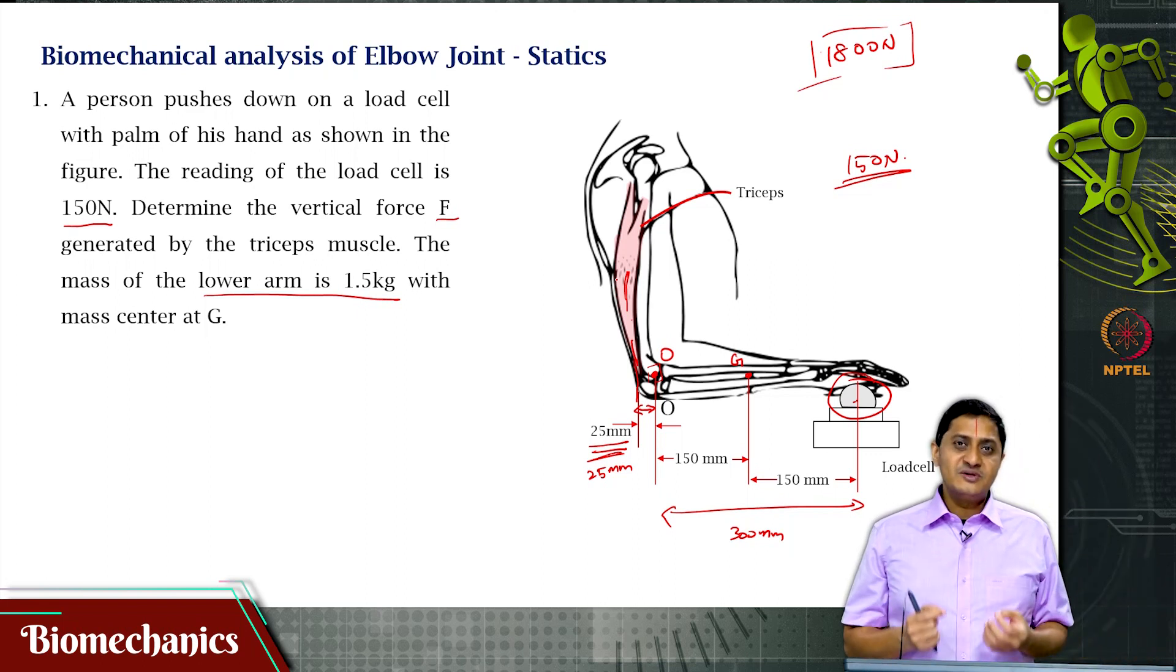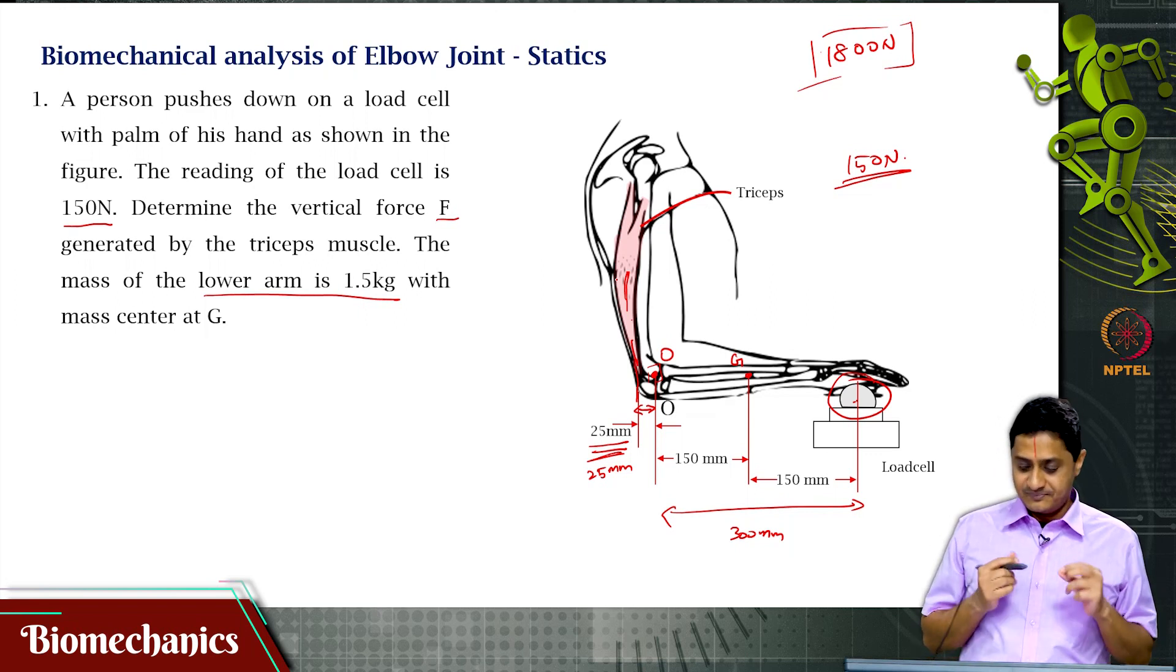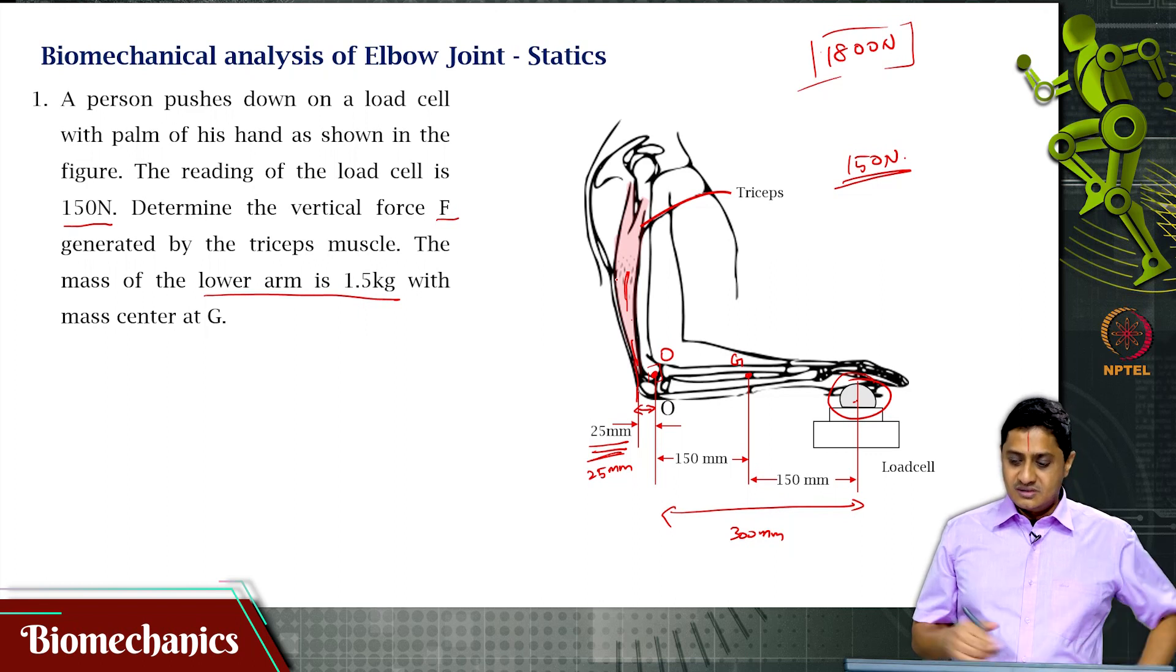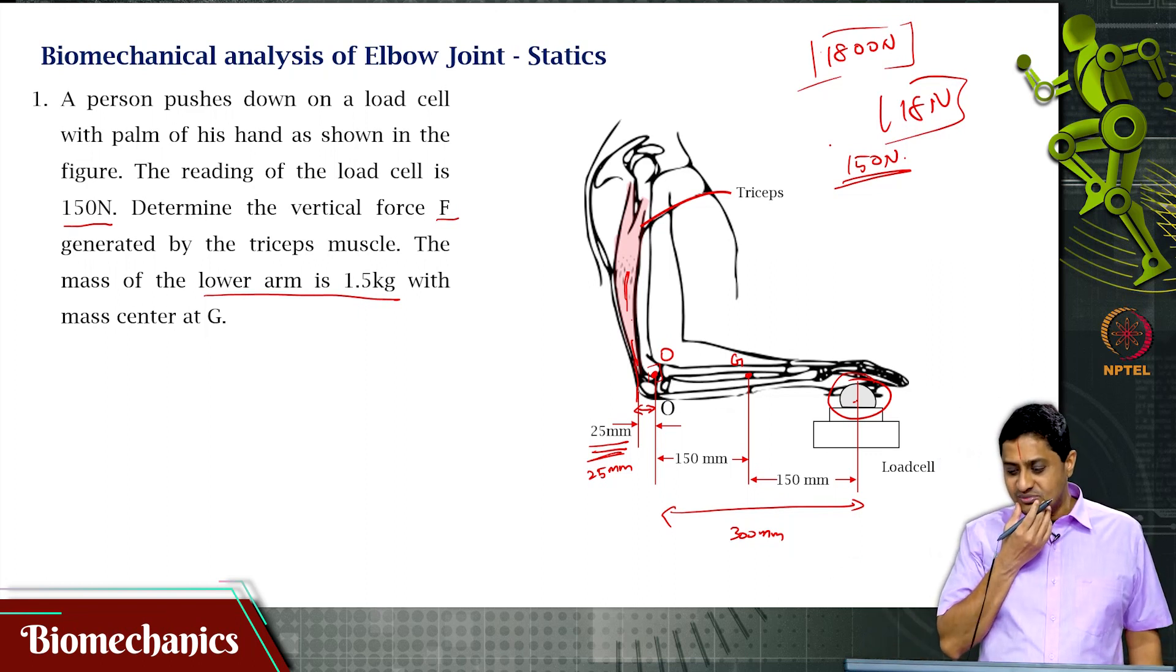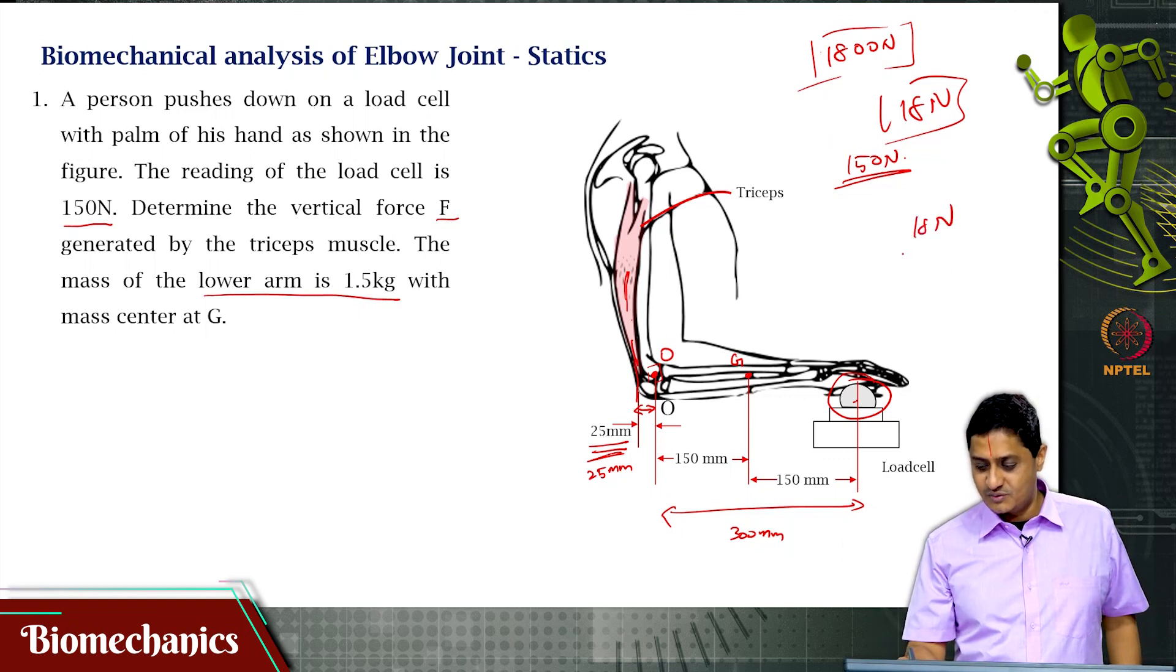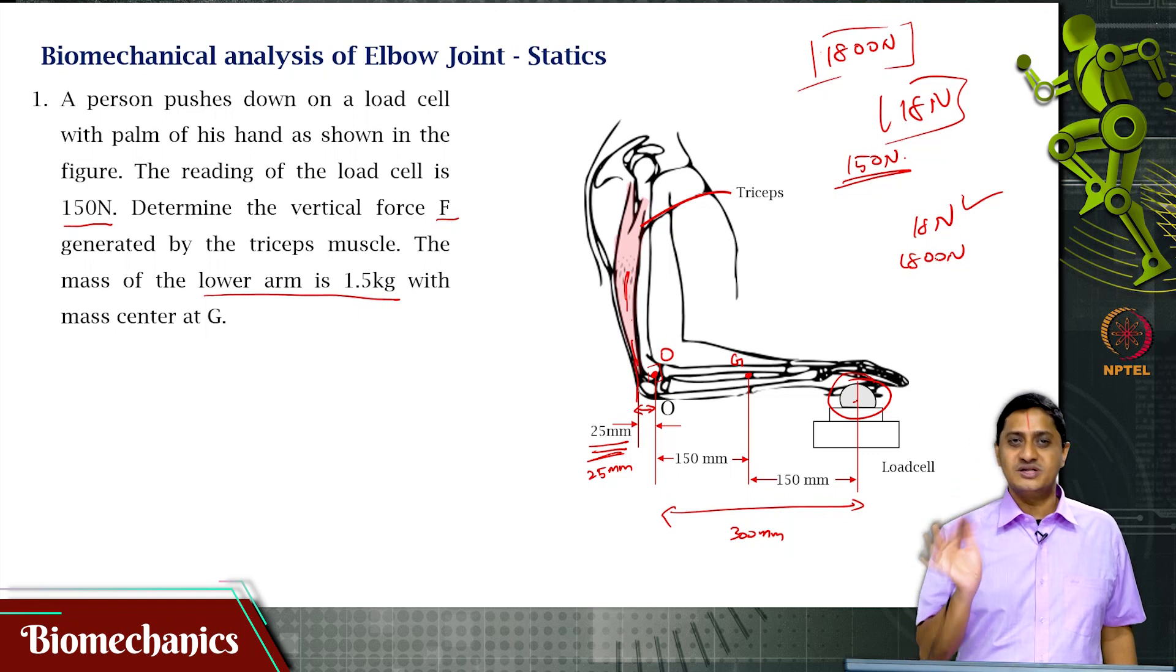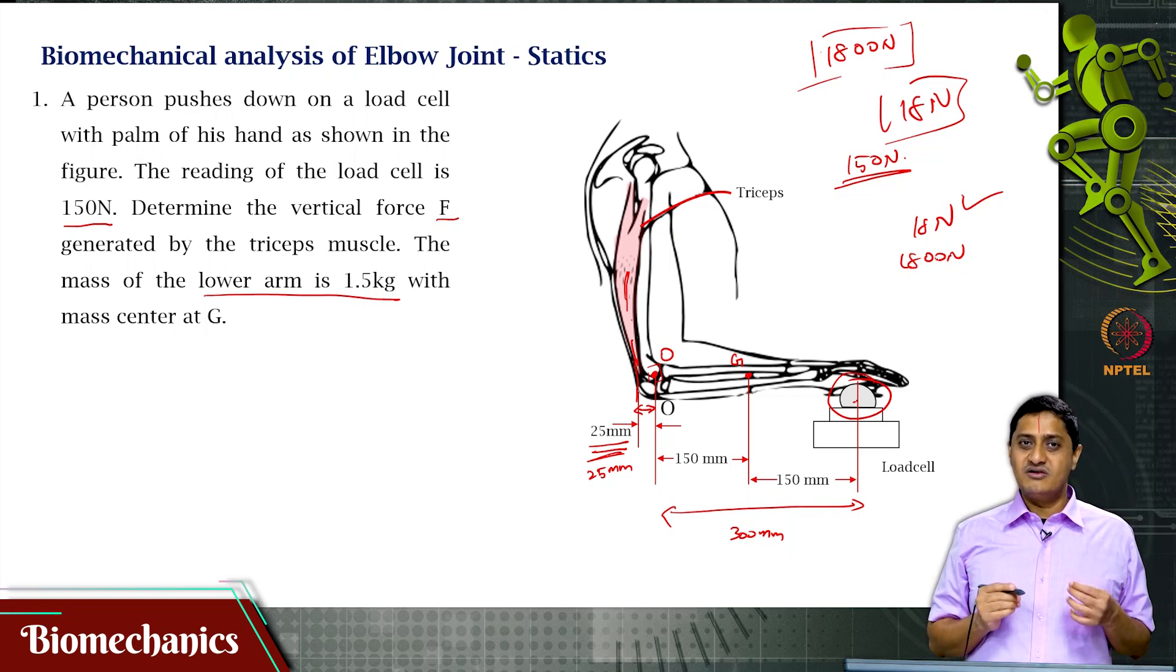It is useful to develop this sort of intuitive back of the envelope approximation solutions before we proceed. Because many times when students solve problems using calculators, they will find the solution to be 18 newtons and they will just mark and move on. It is likely that you have made a mistake somewhere in the numericals. Always have an idea of the scale at which you are expecting a solution.